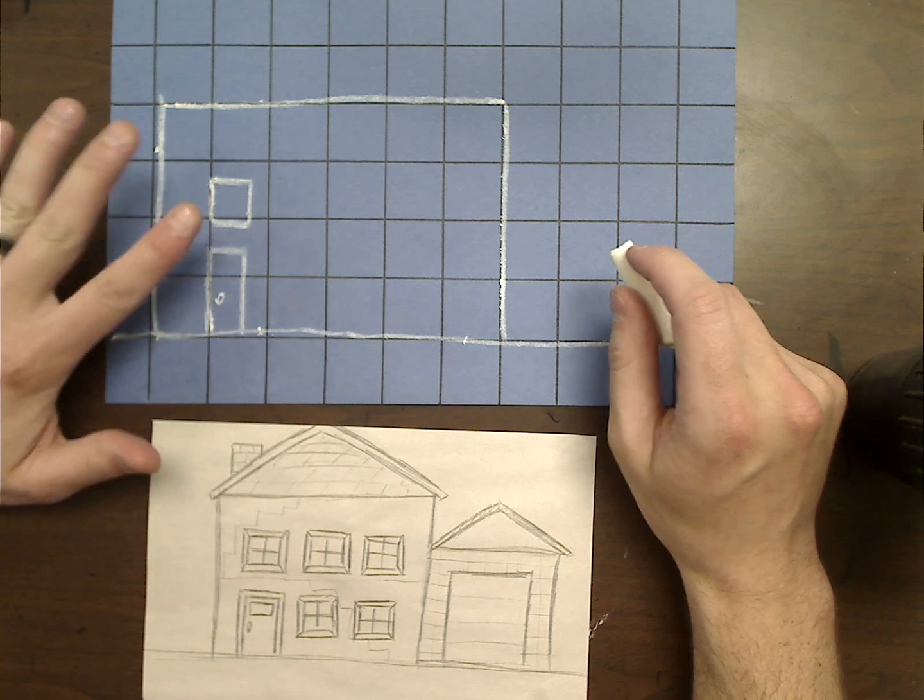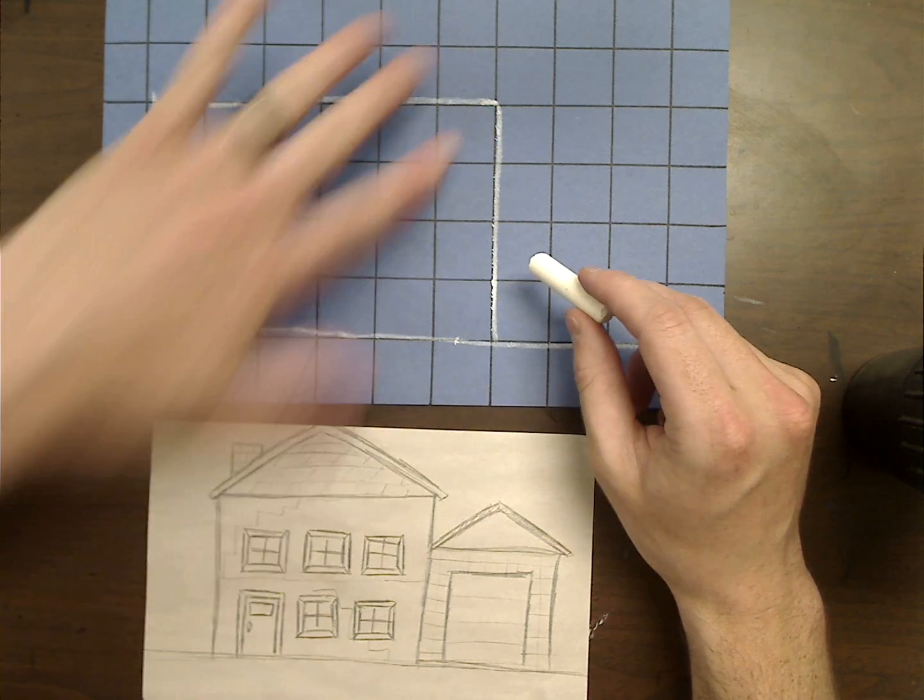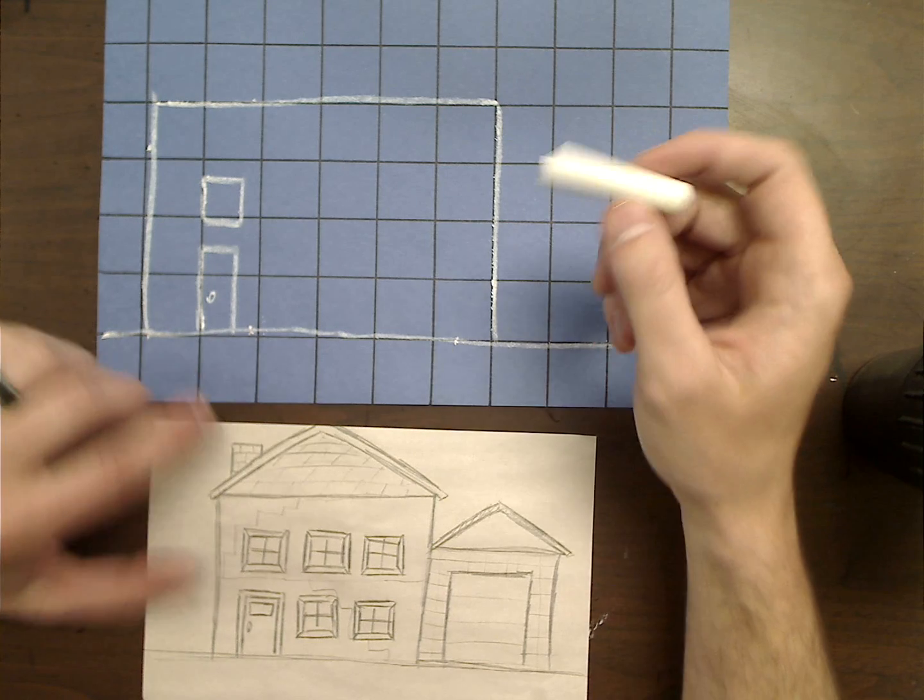So go through and you're going to trace and copy your picture onto your blueprint paper using a white crayon.